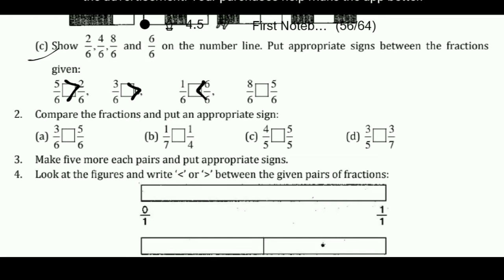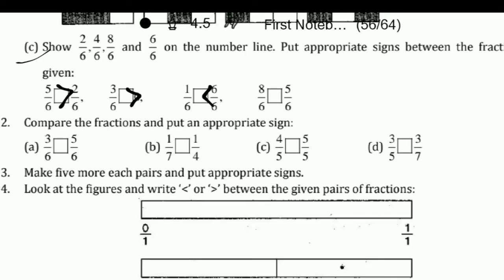Second — compare the fractions and put an appropriate sign. The first question is 3 upon 6 and 5 upon 6. We are having the same denominator, so we compare numerators: 5 is greater than 3. Next, 4 upon 5 and 5 upon 5 — the greater number is 5 upon 5 because we have the same denominator. Now see question B and D: 1 upon 7 and 1 upon 4 — we are having different denominators.